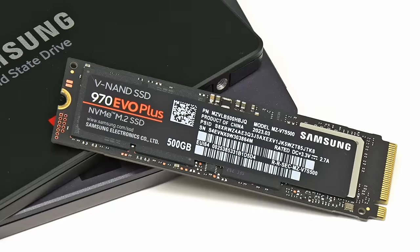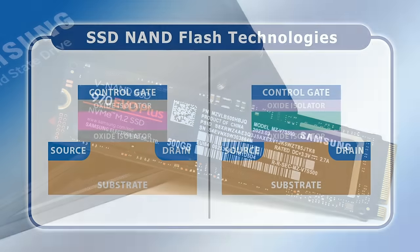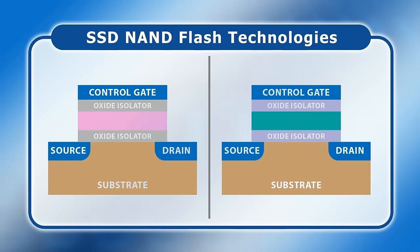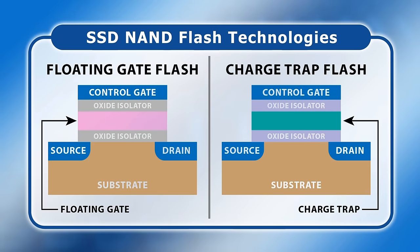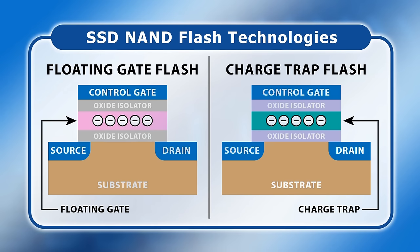Solid-state drives, or SSDs, store data in flash memory cells on flash memory chips. The memory cells are usually NAND logic gates, with two technologies commonly employed, named floating gate and charge trap flash. To write or program data, a voltage is applied to move electrons into the floating gate or charge trap. This changes the resistance between the memory cell source and drain, which can be measured by passing a current between them. Whilst NAND flash cells can be individually written, they can only be erased in blocks.